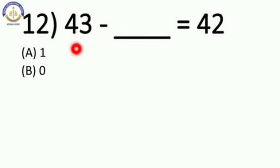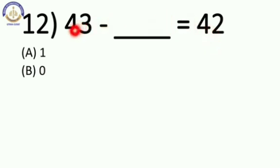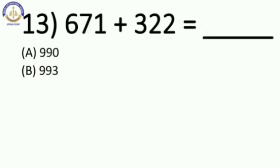Now next: 43 minus blank is equal to 42. Yahan par one number kam hai, right? One number less hai — 43 and 42. So our answer is 1. Option number A, answer 1.